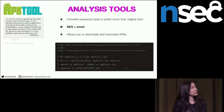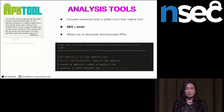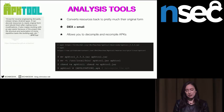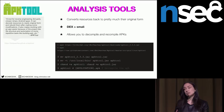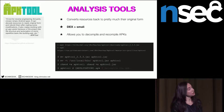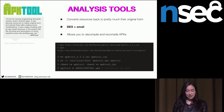APKTool is another great resource for reverse engineering applications. It basically takes them back to their original form, converting DEX files to Smali, which is an intermediary language. It's not great to read, but you can convert Smali to a Java-style language that's more readable if you're a Java developer. You can also recompile APKs after decompiling them and modifying things.